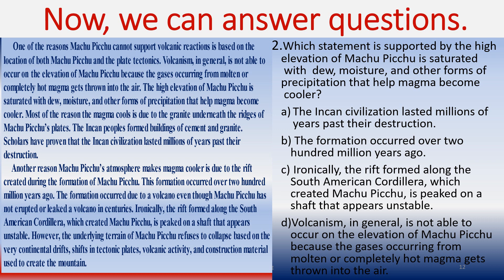Choice B: 'The formation occurred over 200 million years ago.' Let's go ahead and try to find the sentences behind choice C as well — that's what you'd really do on a test. If you can't find support for one choice, move on to the next to either include or rule it out. Remember, you have to manage your time.